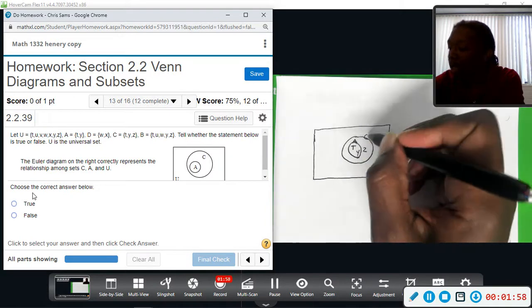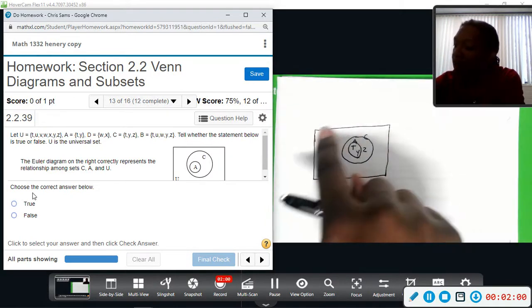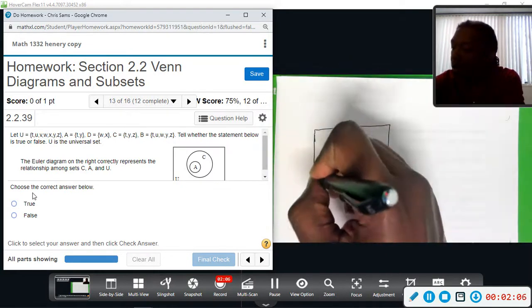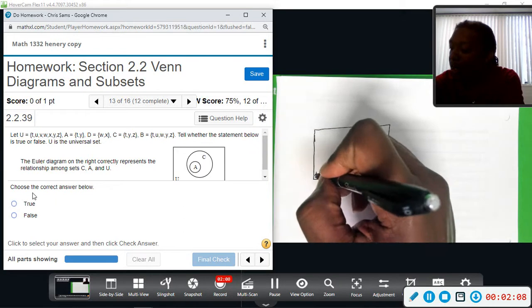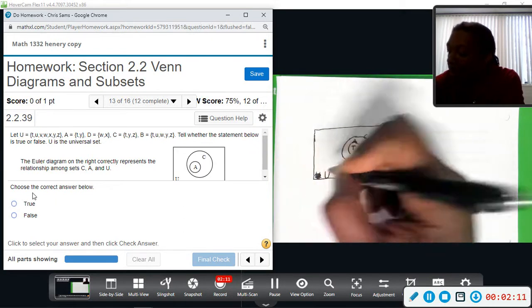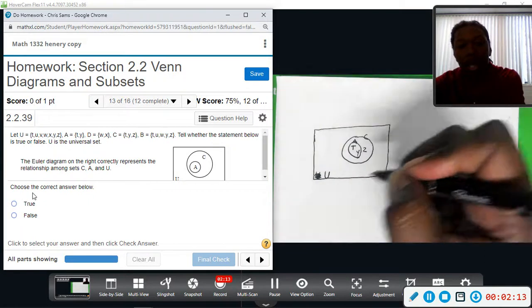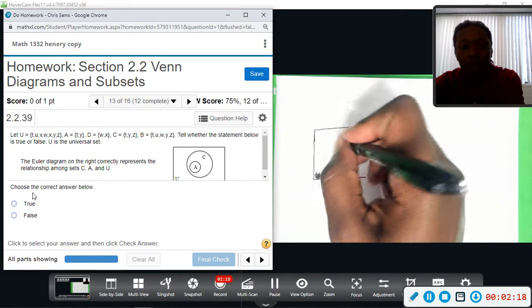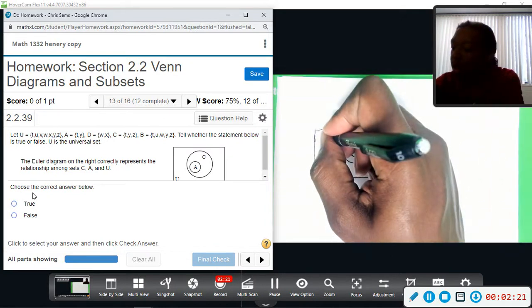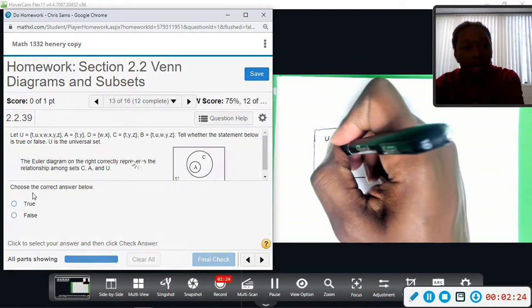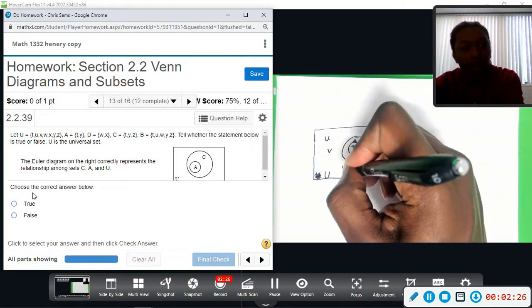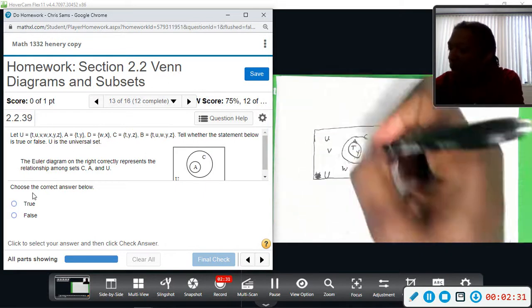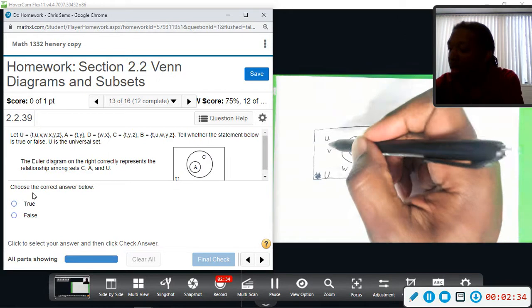And everything that's in A is also in C. And then this space provided on the outside, the universal set, we can list all of those other elements. Don't put a tail on the U, I'm sorry. That's bad grammar. You want to put a U with no tail to represent a universal set. We can list all of the other elements that are not t, y, and z. We can put them on the outside. So that would be like the lowercase u, v, w, x. Okay, we can put all of those.